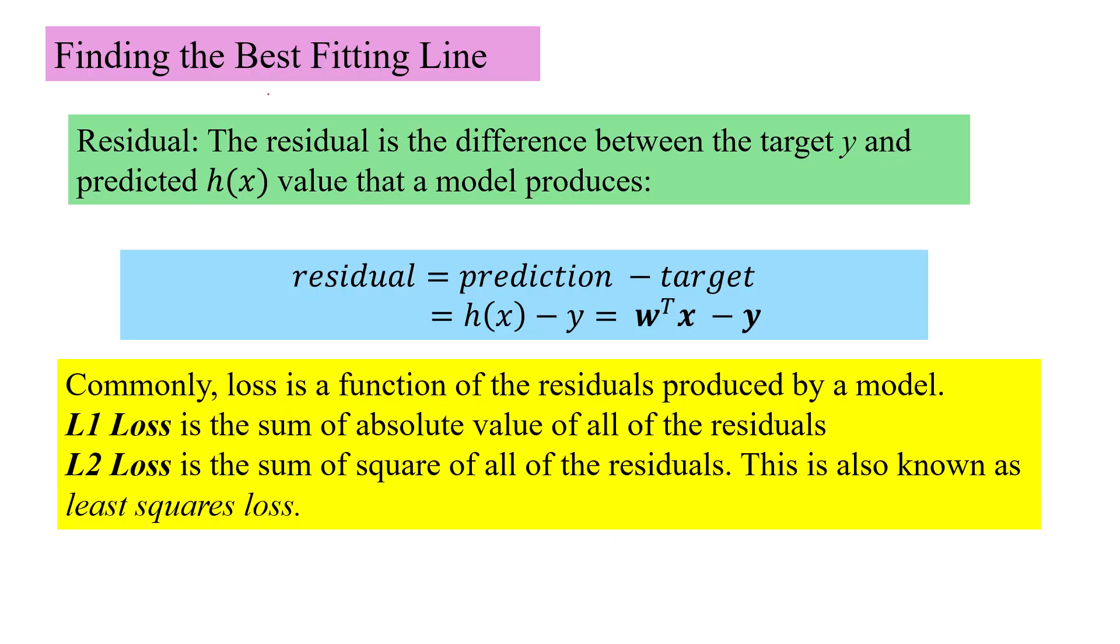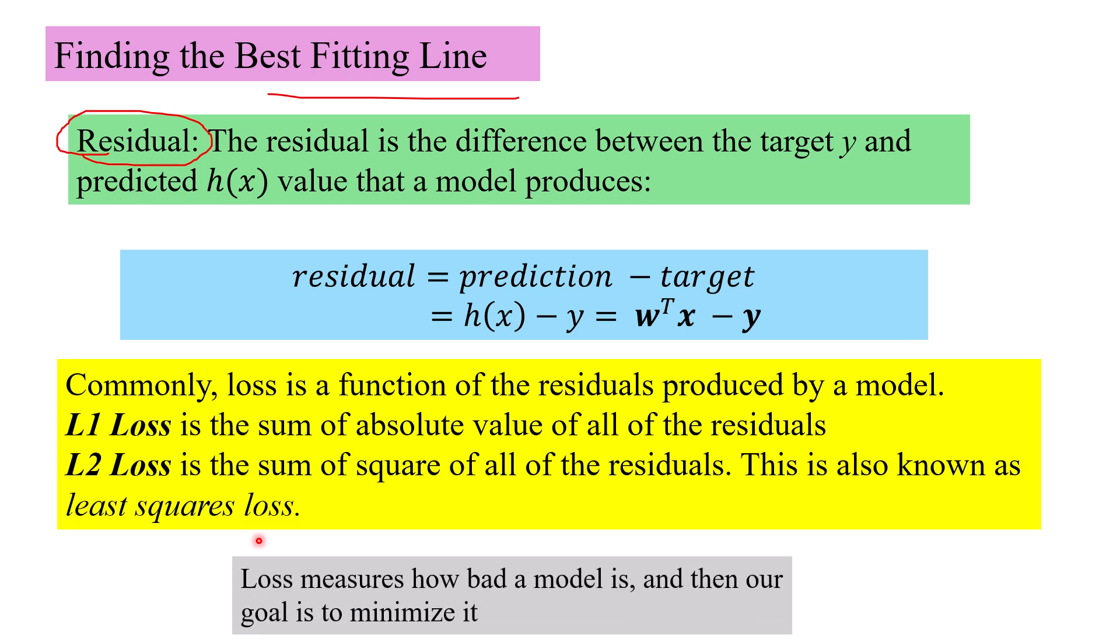How to find this best fitting line? For this we bring in the concept of residuals. Residual is the difference between the target and the predicted value. This is something which we would not want to be high. And so, we define loss as the function of residuals. L1 loss is the sum of absolute value of all the residuals and L2 loss also known as least squares loss is the sum of square of all the residuals.